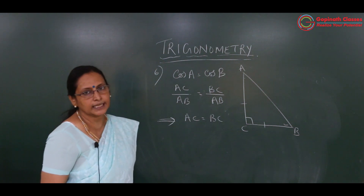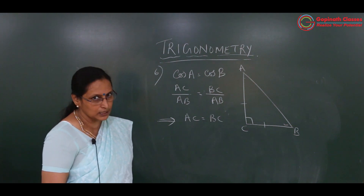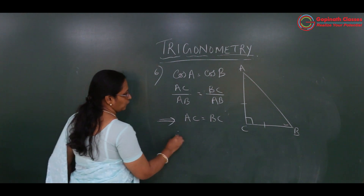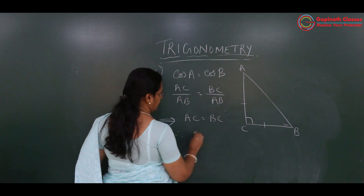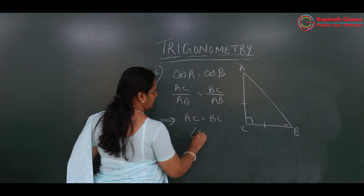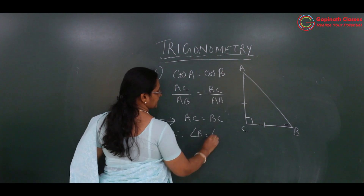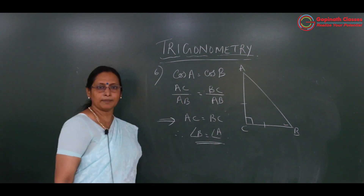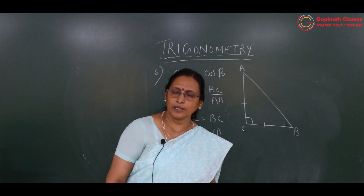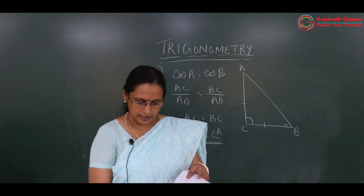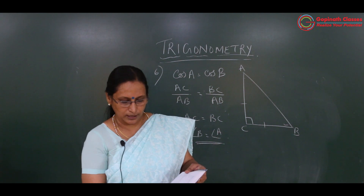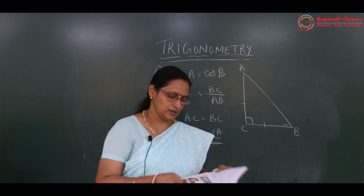The denominator is the same, so obviously the numerators will be equal. This implies AC is equal to BC — these two sides are equal. If two sides are equal, as you studied in 9th standard, their opposite angles will be equal. Therefore angle B equals the opposite angle of BC. Since two sides are equal, their opposite angles are equal.